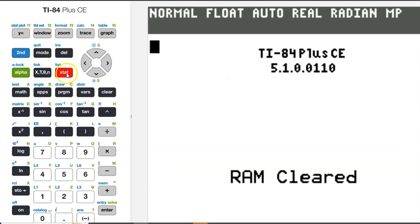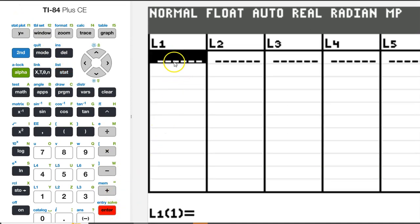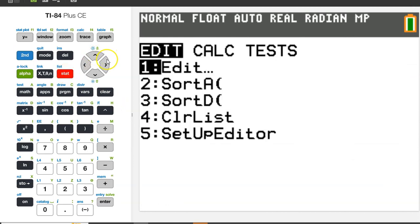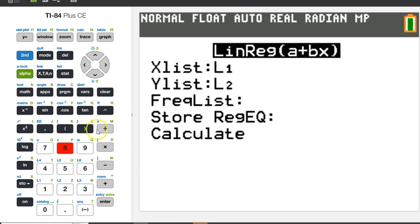Just hit the stat button and hit enter to edit, and let's enter the input values in L1 and the output values in L2. Once your data is typed in, hit the stat button, switch to the calc menu, and choose your regression model. We were told to pick a linear regression model of the form A plus BX, so choose option 8.